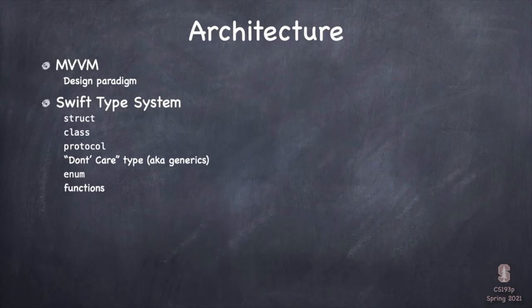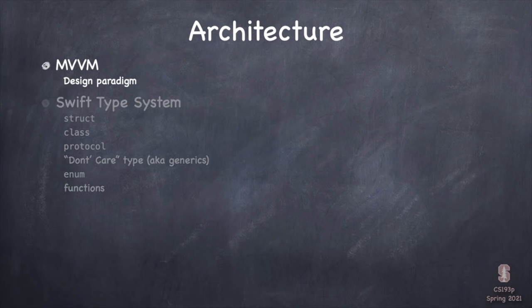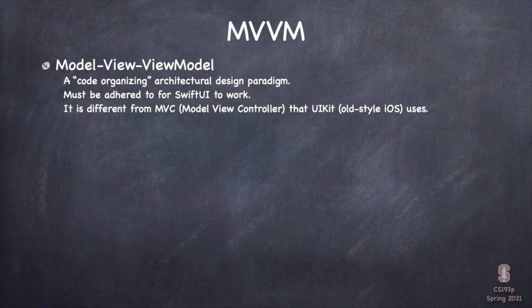First, I'm going to cover these two really important conceptual ideas: MVVM, which is a way of organizing all the code that goes into our application, and the Swift Type System, which obviously enables everything we do in the Swift language and thus in SwiftUI. So let's talk about this MVVM thing first. It's a design paradigm that makes it clear where all the different components of your code go and how they interact with each other.